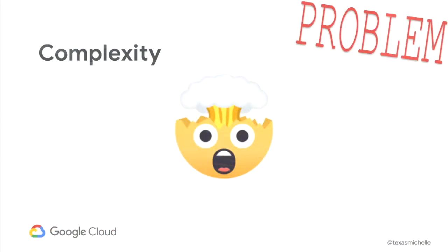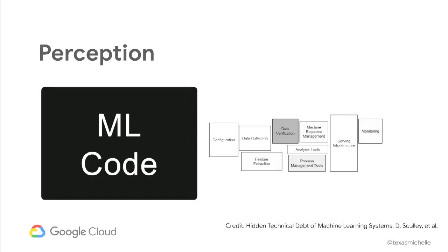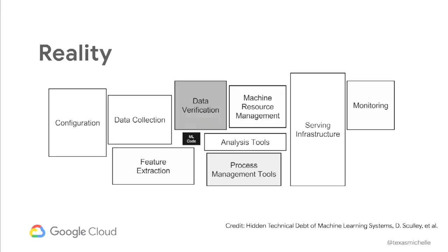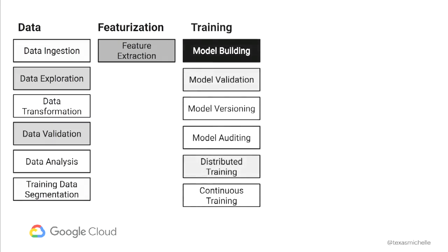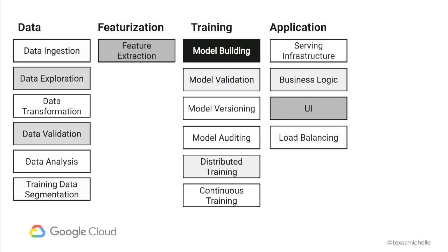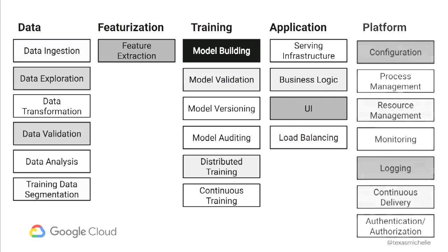The next problem: complexity. If that piece of production code was a machine learning application, there's this outsized perception that the ML components are the biggest part — when that doesn't usually reflect reality. There are a lot of pieces just to do anything with your data, just to generate features. You can build your models eventually, but then you have to version them, improve them, run them again, add new data. That model sits inside an application, serves a purpose, and that application lives on a platform. Supporting all of those things is non-trivial.